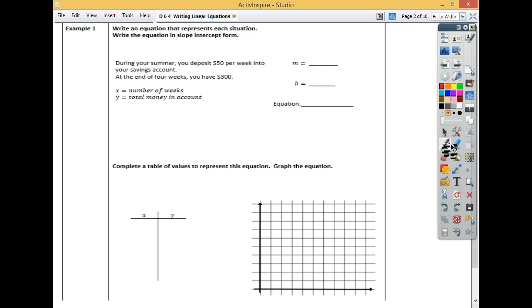Example 1 says write an equation that represents each situation. Write the equation in slope-intercept form, and what is that? y equals mx plus b. So first of all, let's find our m, and then we have to figure out our b and write our equation, y equals what? Here's the information given to you. During your summer, you deposit $50 per week into your savings account.